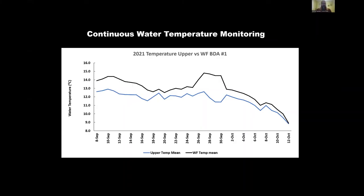Since we're in a coastal environment, we don't really deal with higher water temperatures like other areas in the basin, so we don't have to worry about water temperature approaching what would be detrimental to juvenile coho salmon. However, there was about a two-degree increase in water temperatures between upper McGarvey Creek and the West Fork BDA that we created.